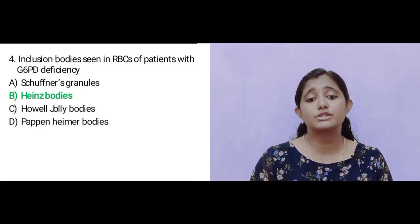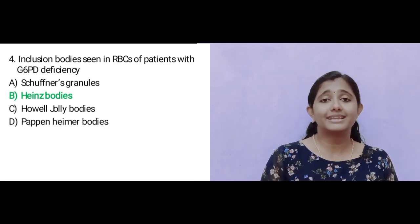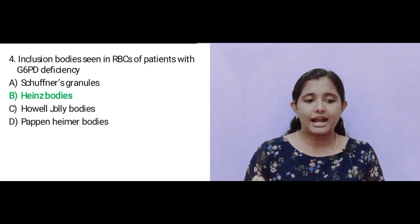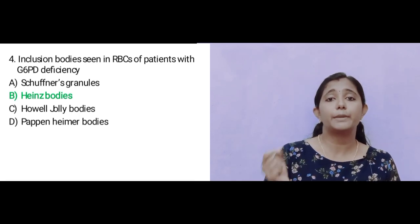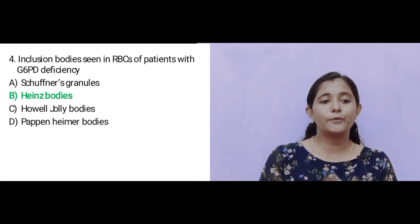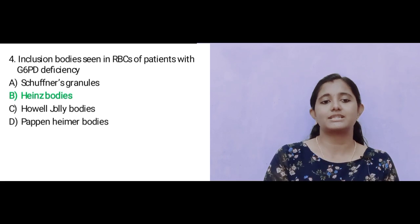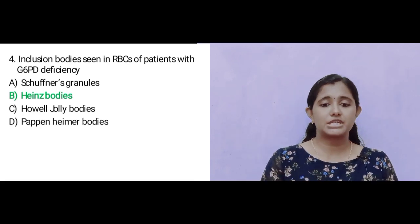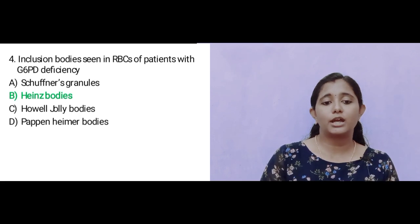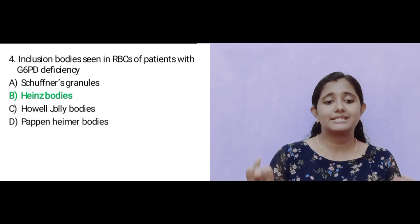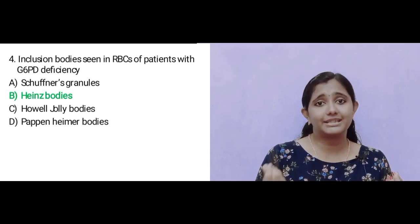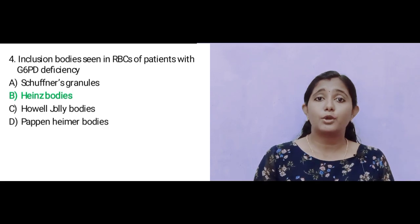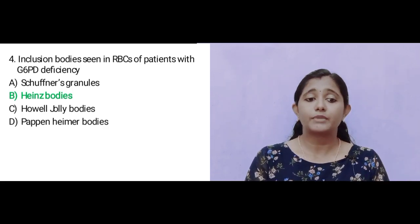Pappenheimer bodies are basophilic granules of iron — abnormal iron granules seen in cases such as splenectomy, megaloblastic anemia, hemolysis, and myopathies.